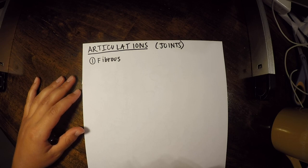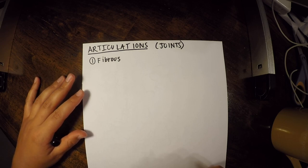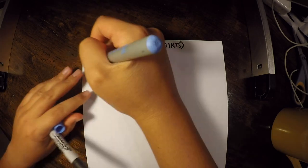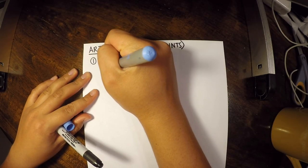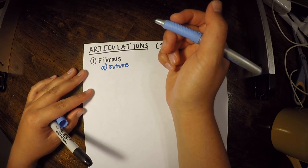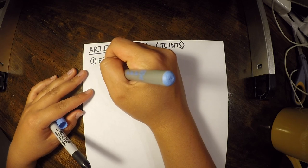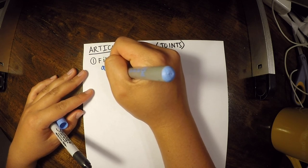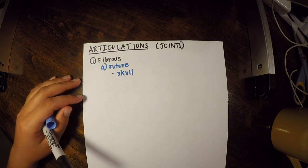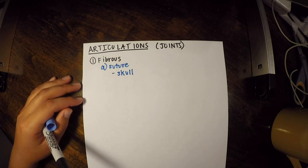Our first type of fibrous joint is suture. An example is the skull — you have different sutures that join the separate bones of the skull together. We'll discuss those later when we get to the nervous system.